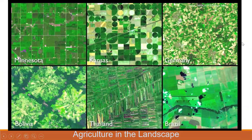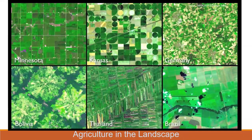This is from John Foley's TED talk, which is also in a paper you read. It shows what agriculture looks like in the landscape in different places in the world. What I like to pull out of this is that there are diverse ways of organizing agriculture — diverse ways to grow food — and those have varying impacts on the landscape as well as varying possibilities for food production. We need to think about all of these things.